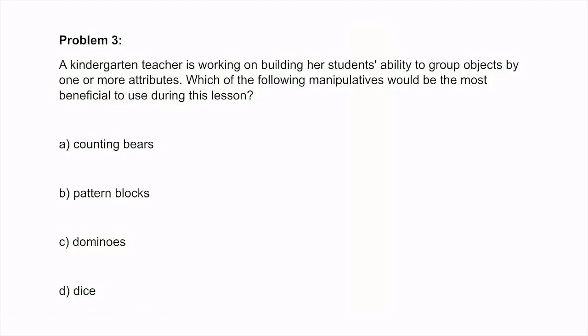Problem 3: A kindergarten teacher is working on building her students' ability to group objects by one or more attributes. Which of the following manipulatives would be the most beneficial to use during this lesson? Let's go through each option and think about the attributes that a student could sort them by. A, counting bears. Usually counting bears are a variety of colors, so students could sort them by color. But they do look identical, so that would be the main way they could sort them.